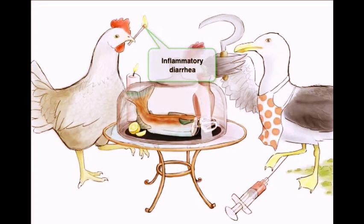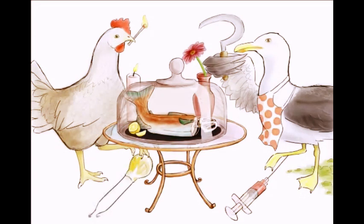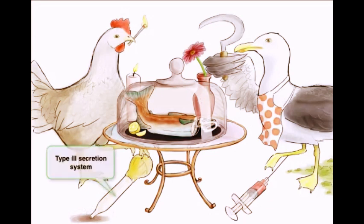A virulence factor for Salmonella — which also appears in Shigella and Yersinia pestis — is that it contains a type 3 secretion system. This is a protein that not only detects eukaryotic cells, but when it does, it secretes a protein that helps with infectivity. We'll draw a turkey baster near the chicken as a symbol for the type 3 secretion system, and we'll keep reusing it in future drawings.